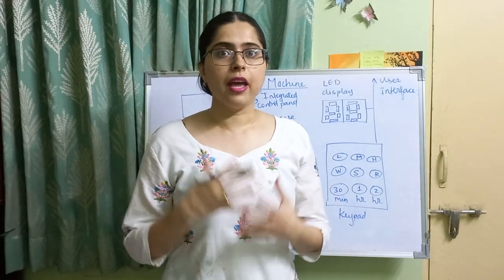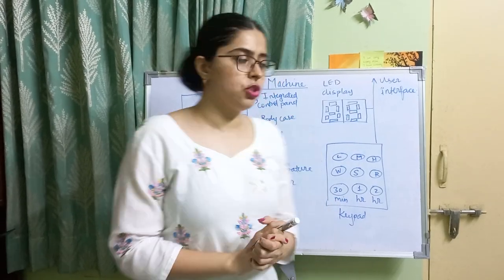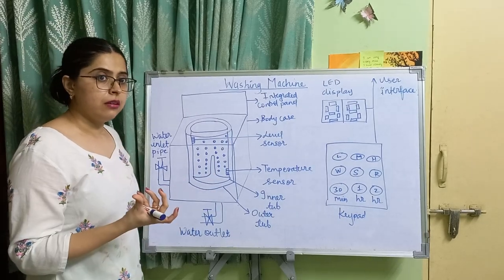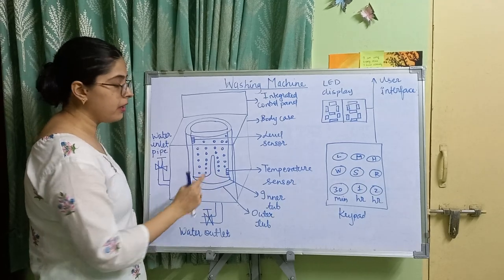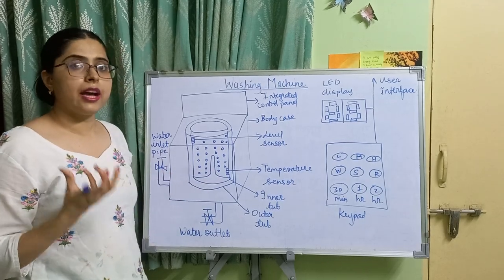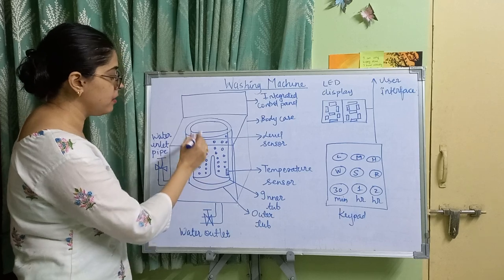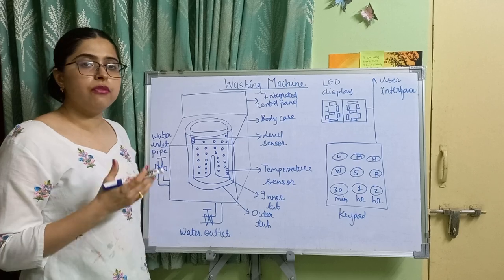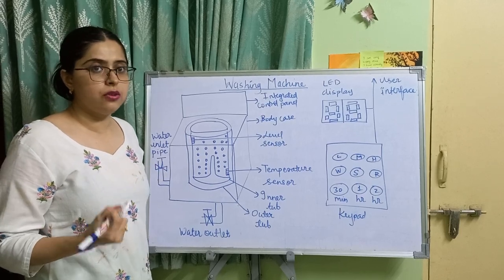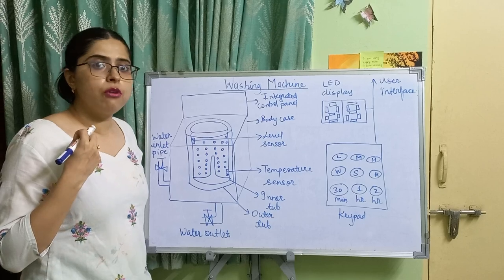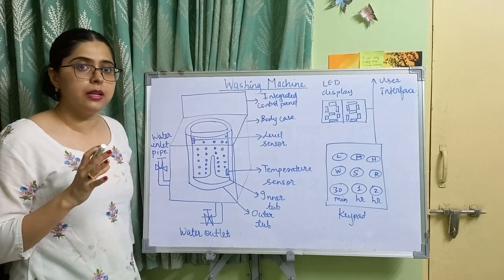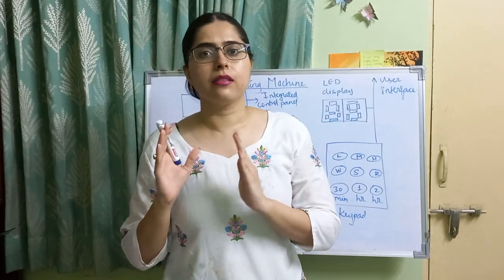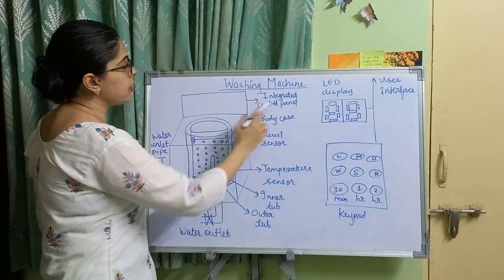Now the actuator part of the washing machine: you can see this motorized agitator — that comes under the actuator part. Then the tumble tub — this whole container — is also part of the actuator. The water inlet valve controls the flow of water into the washing machine, and the water drain valve drains the water. These are all contained in the actuator part.